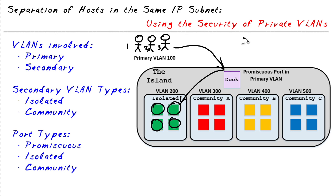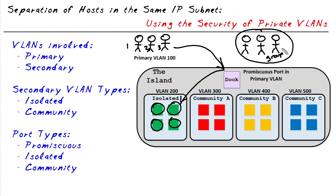Another group of people — maybe they're friends — want to go to the island and be able to see, visit, and hang out with each other. To accomplish that, they would arrive at the dock and be placed in what's called a community area for that group. So persons four, five, and six can all communicate with each other and see each other while on the island.